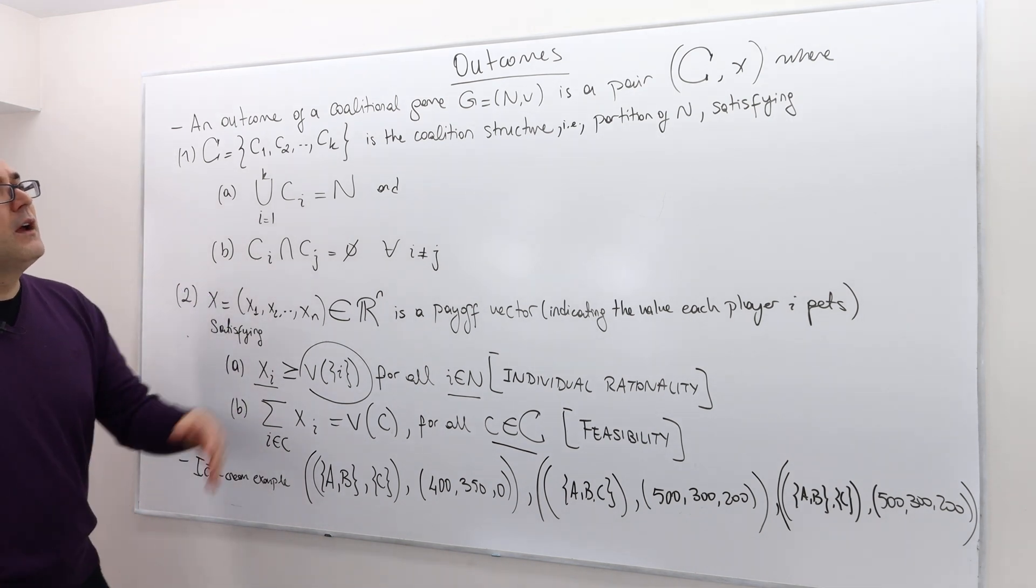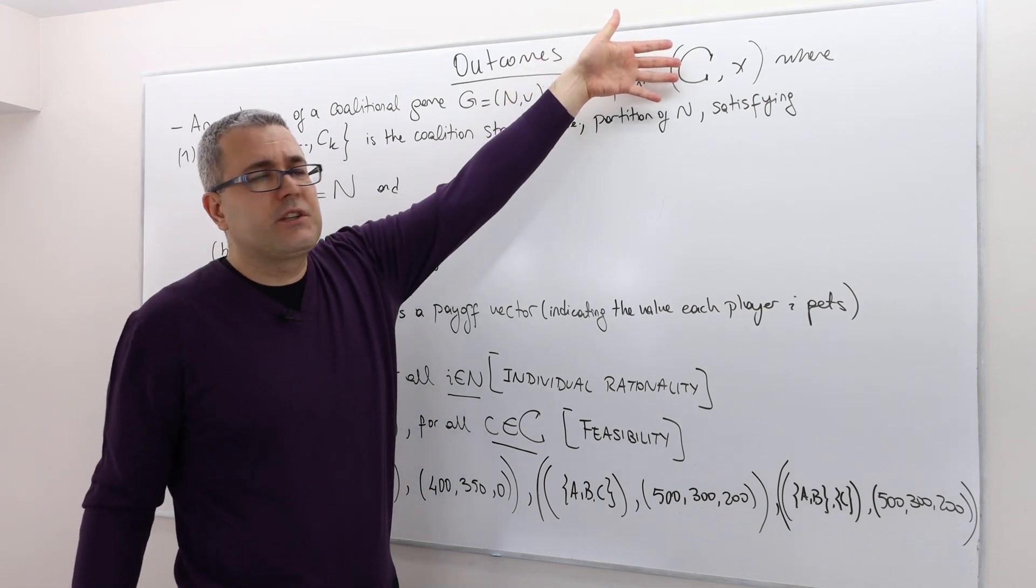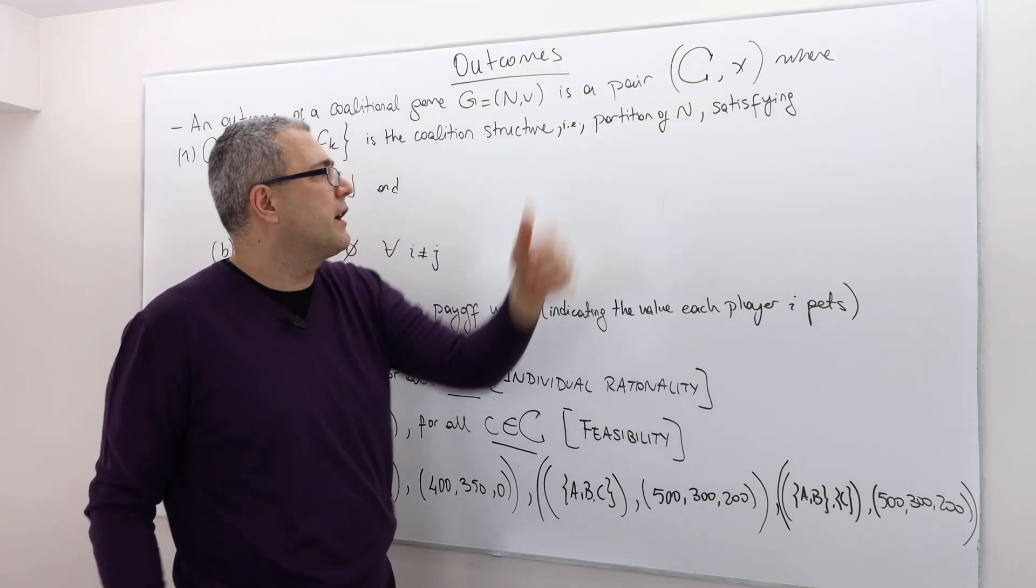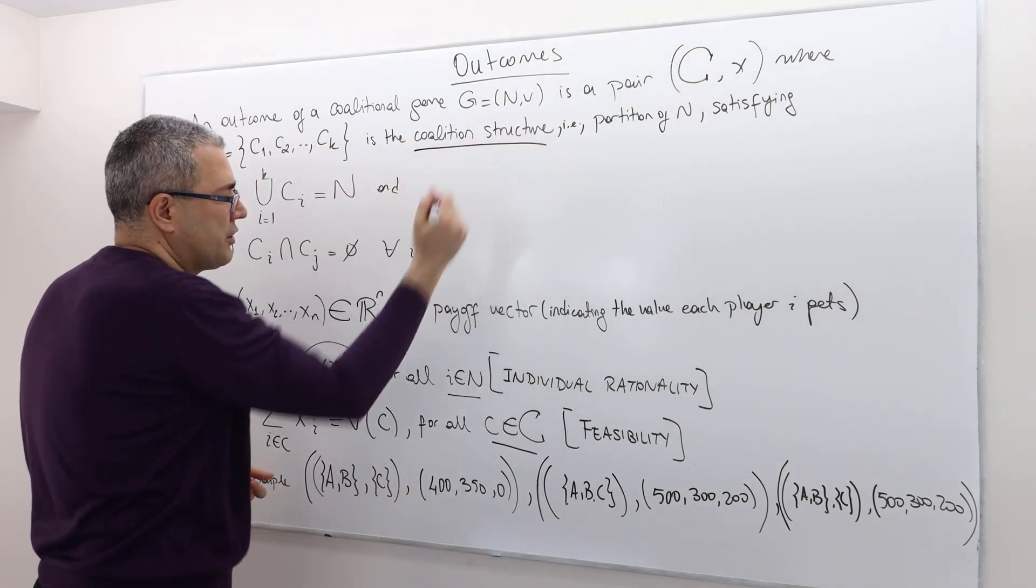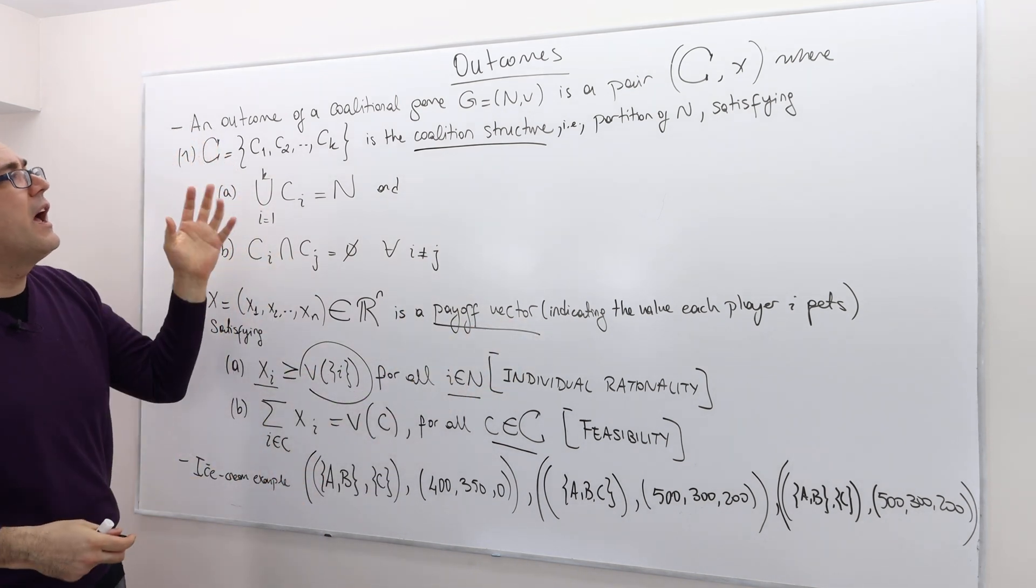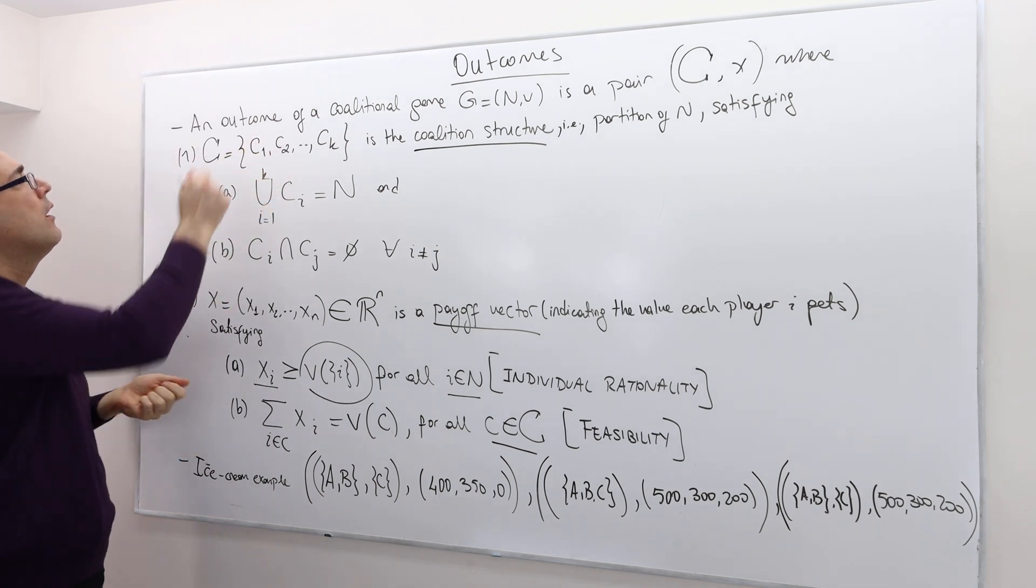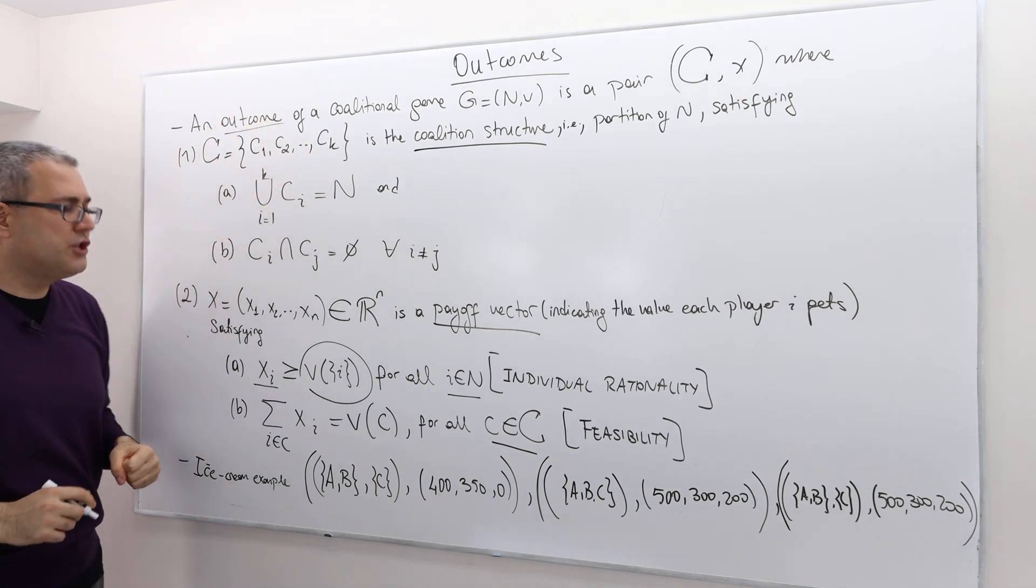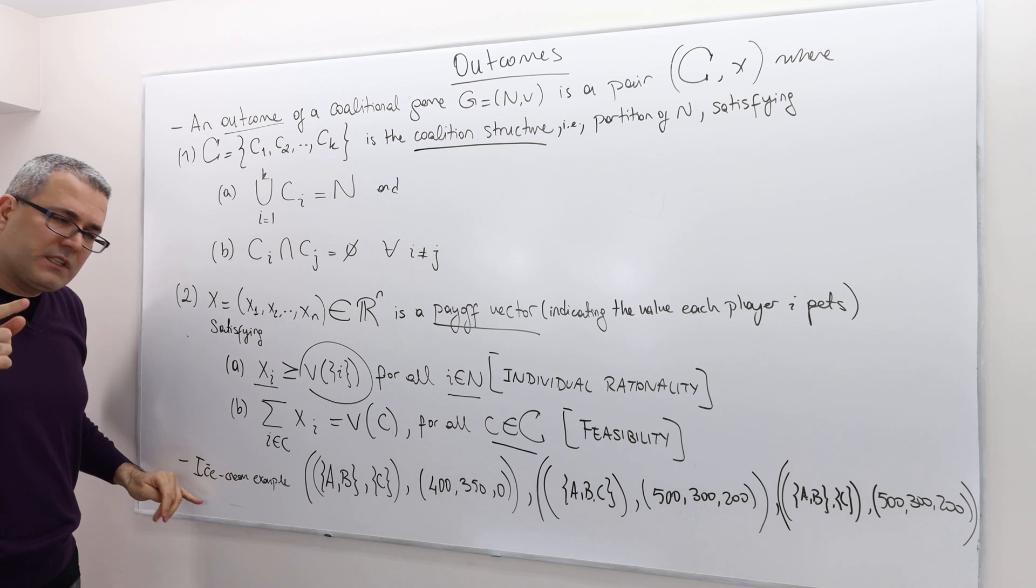So if the coalition structure and the payoff vector satisfy those properties, well, then we call this as an outcome of a coalitional game, G. So once again,